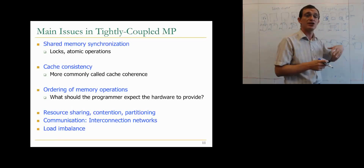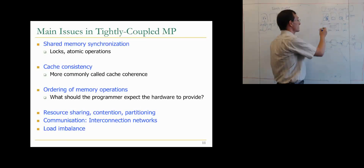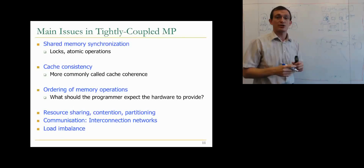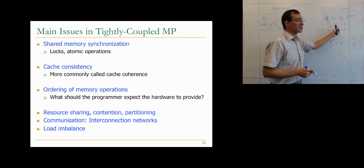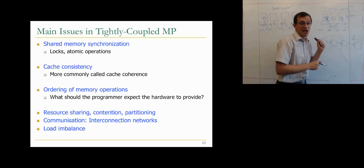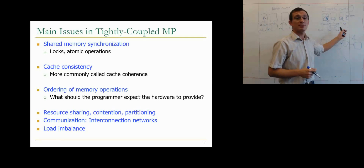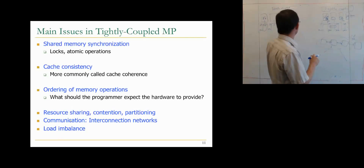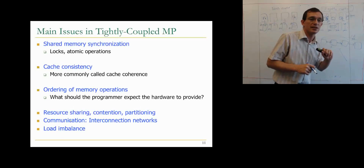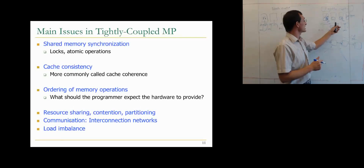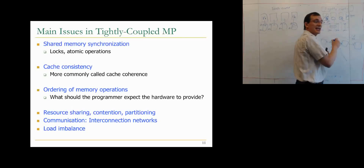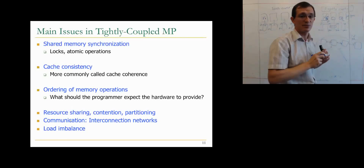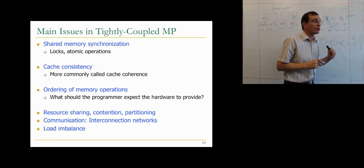Other issues include resource sharing, contention, and partitioning — how to access shared memory and solve contention problems, and how to partition data across potentially distributed shared-memory machines. Communication becomes an issue, as do interconnect design and load imbalance. We'll take a look at how to partition your problem so that load is balanced across different processors.